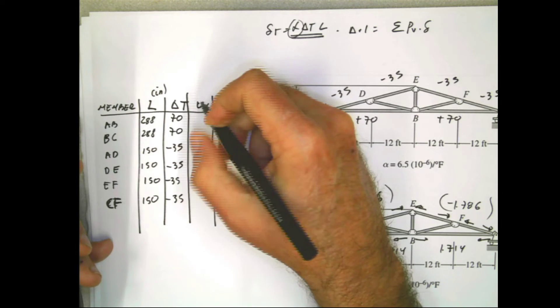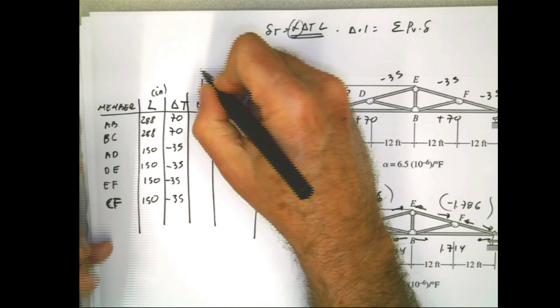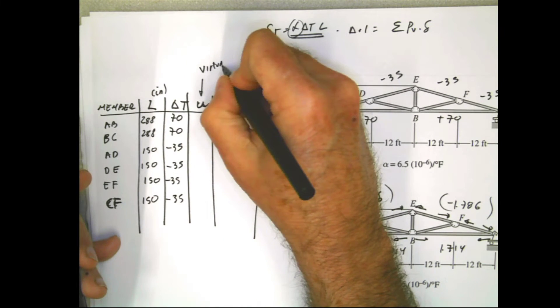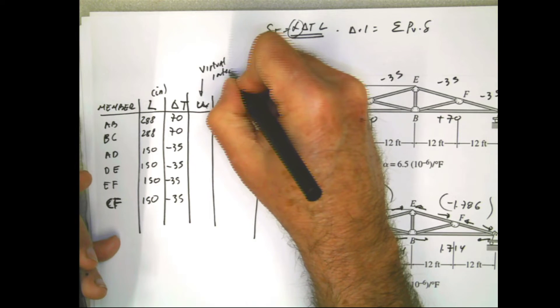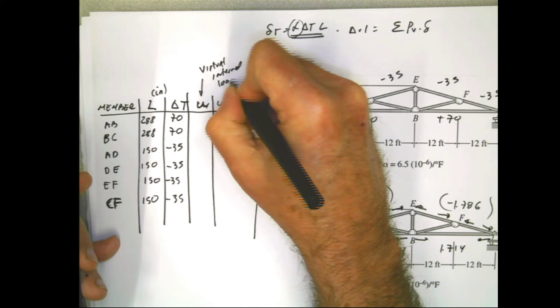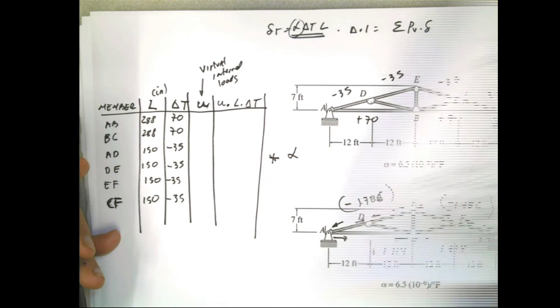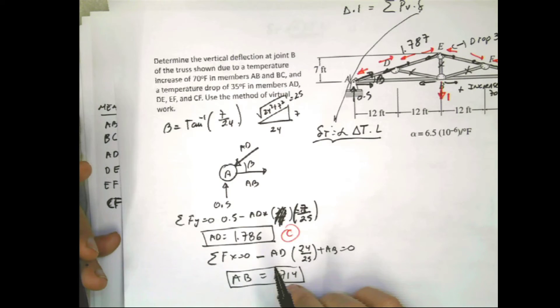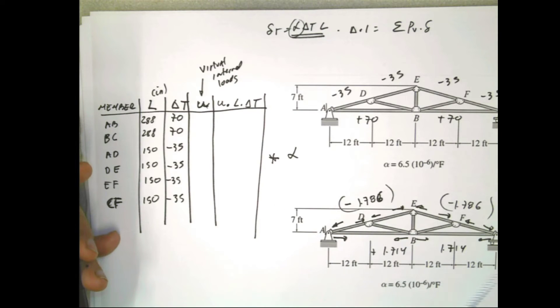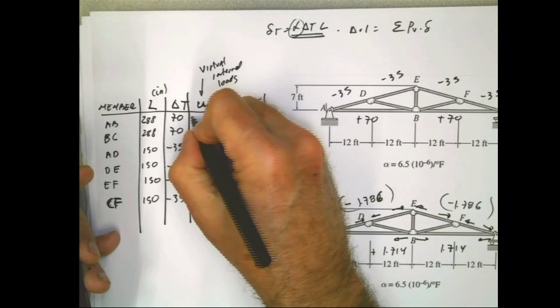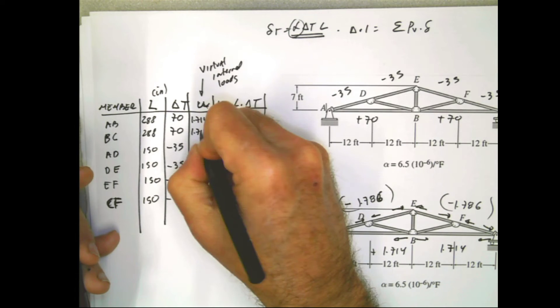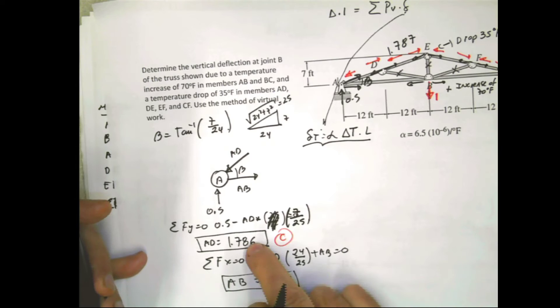This refers to the virtual internal loads in the bars. And for AB and BC that was 1.714, and for AD and the rest is negative 1.786.